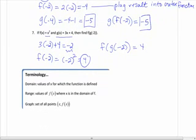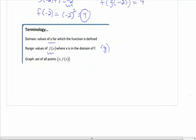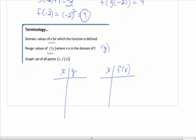Another bit of terminology you need to know is the domain and range. The domain are the values of x for which the function is defined, and the range is the value of f of x or y, the y values, where x is in the domain of f. And then when you graph it, if you were to make a table of values, normally we make a table of x and y, this table instead would be x comma f of x. Remember, f of x is just another way of saying y. All right. Nice job.